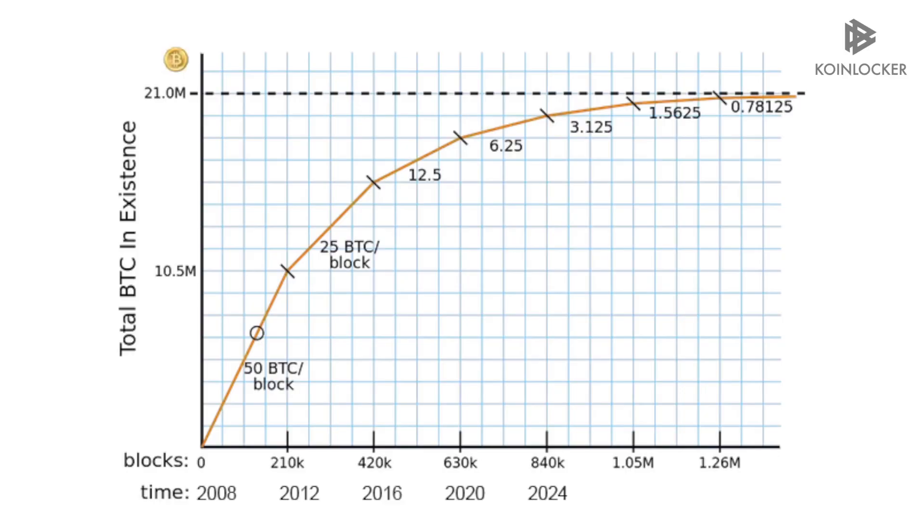This is similar to minting new coins. Every block in the blockchain contains batches of transactions. A new block is created every 10 minutes and it contains new bitcoins. The rate of issuing bitcoins is slowly decreasing. The creators of the Bitcoin system have intentionally designed it this way to induce scarcity, so it reduces every four years.